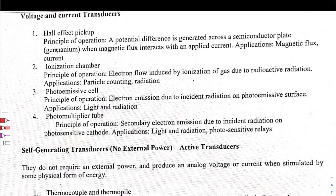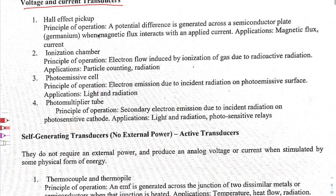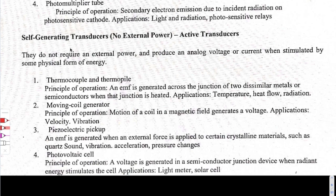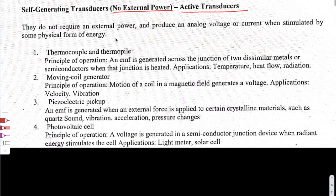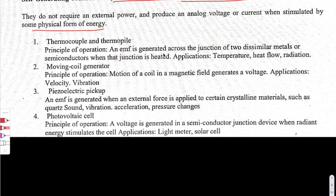After resistance, capacitance, and inductance transducers, we come to voltage and current transducers. Then there are self-generating transducers: no external power is needed. These are also a category of active transducers — they produce an analog voltage or current when stimulated by some physical form of energy.